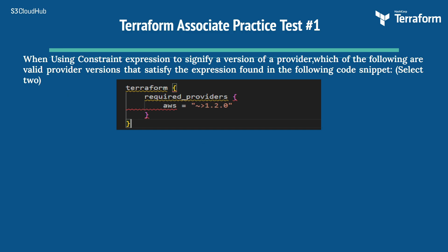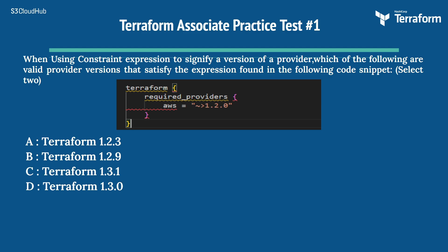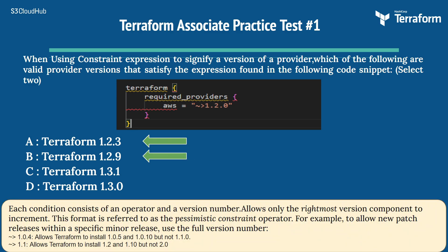Question 1: When using a constraint expression to signify a version of a provider, which of the following are valid provider versions that satisfy the expression found in the following code snippet? Select 2. Options: A) 1.2.3, B) 1.2.9, C) 1.3.1, D) 1.3.0. The right answers are A) 1.2.3 and B) 1.2.9. Each condition consists of an operator and a version number. The pessimistic constraint operator (~>) allows only the rightmost version component to increment. For example, ~>1.0.4 allows 1.0.5 and 1.0.10 but not 1.1.0; ~>1.1 allows 1.2 and 1.10 but not 2.0.